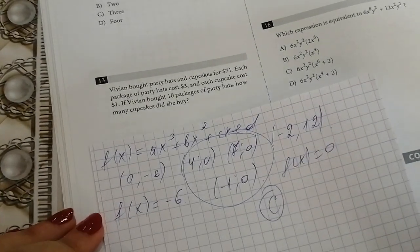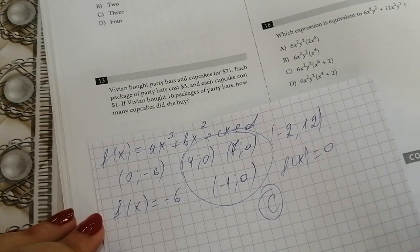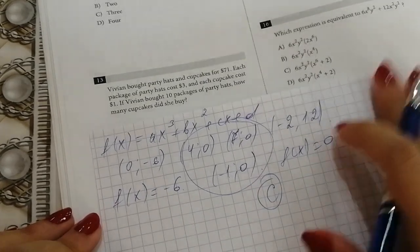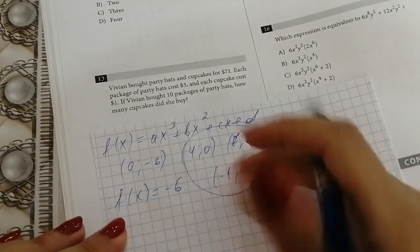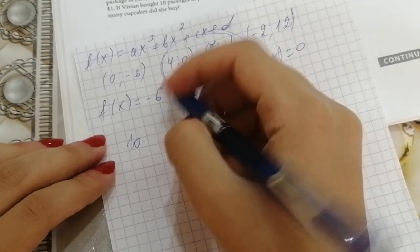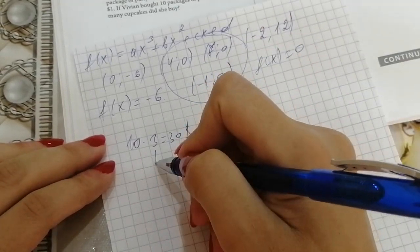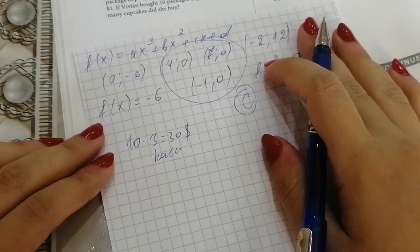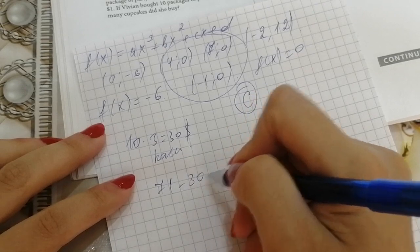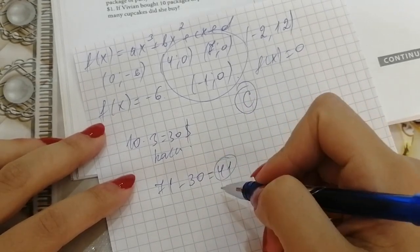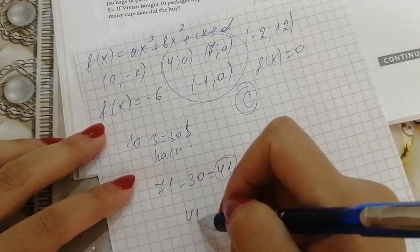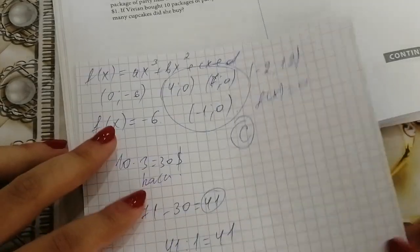Vivian bought party hats and cupcakes for $71. Each package of party hats costs $3 and each cupcake costs $1. If Vivian bought 10 packets of party hats, how many cupcakes did she buy? 10 packets times $3 means she spent $30 on packets. Total was $71, so $41 was spent on cupcakes. Since each cupcake is $1, she bought 41 cupcakes.